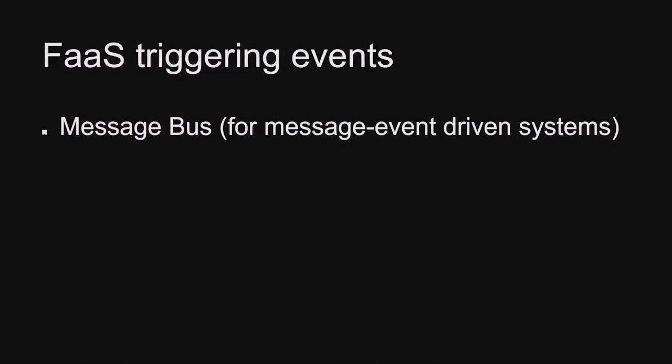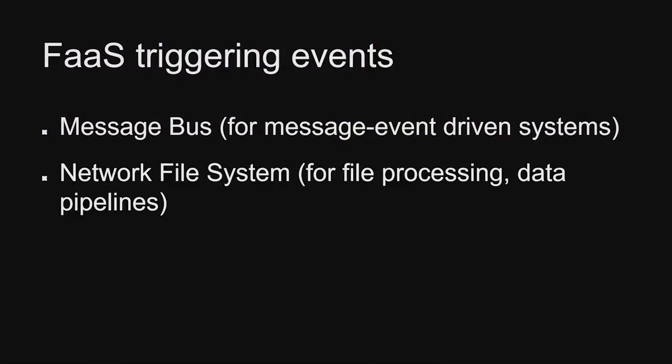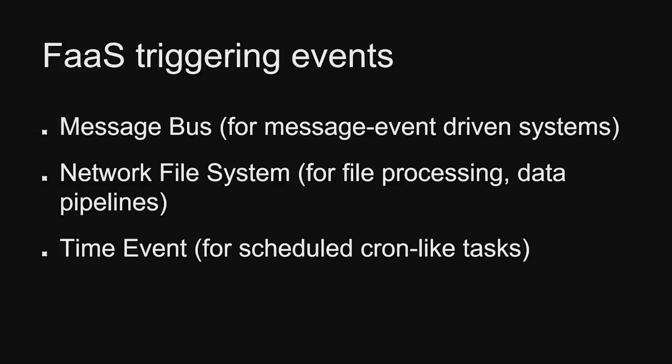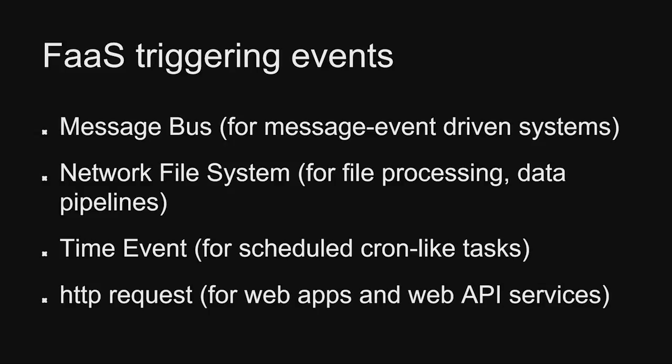Functions as a service depends significantly on the types of events that we can configure our functions to run on. Fortunately, there are a whole ton of different events available. You can use a message bus for message event-driven systems. You can use a network file system or an object store like S3 for file processing, and this also lets you create data pipelines. You can use time as your event, which means you can replace your cron process and cron applications using functions as a service. And finally, you can use HTTP requests as your event source, so you can develop web apps and web API services using functions as a service.